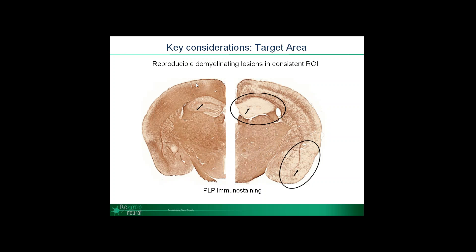Here we have two examples of brains stained with PLP to look at myelinated axons. On the left is a wild-type animal with dense staining, and on the right our MS model of demyelination that demonstrates significantly fewer myelinated axons. In our demyelinated model, you can clearly see extensive loss of PLP staining both in the hippocampus and throughout the whole cortex. However, when we look specifically at the cortex, there's one region where we see significantly more loss of PLP staining than others.